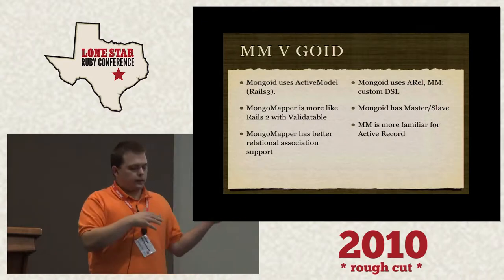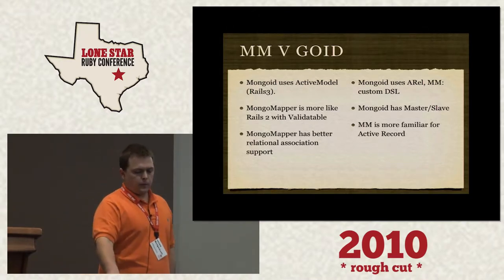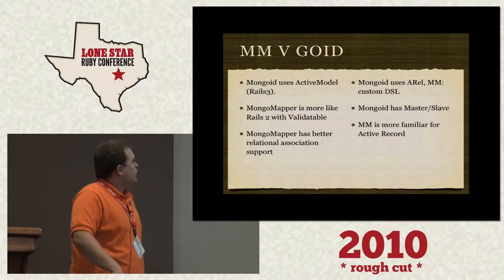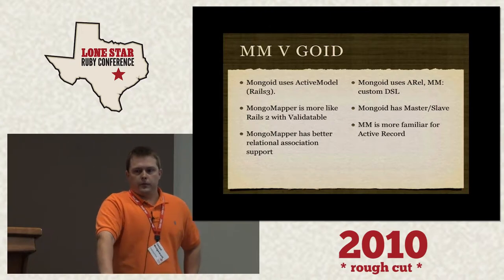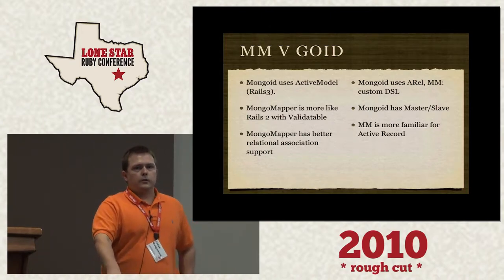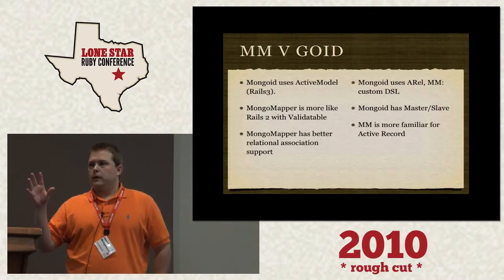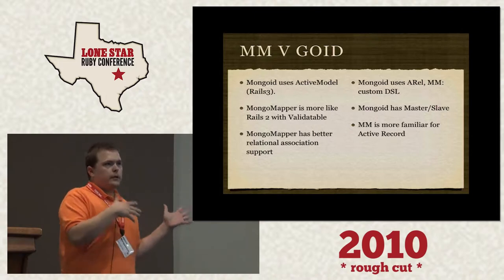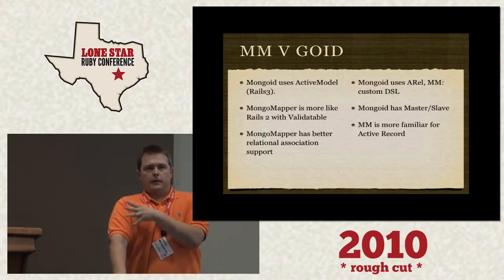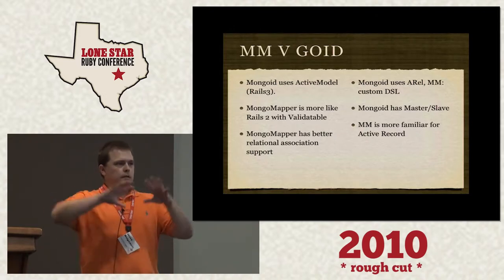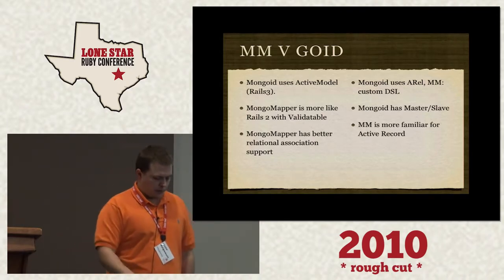On the plus side, MongoMapper has better associations — you can say school.students and just walk the tree very easily; Mongoid, you can't. Mongoid uses Arel for your queries. MongoMapper just released a domain-specific language to build all of your where clauses, which is pretty nice. MongoMapper is more familiar for ActiveRecord users — easier to drop a Rails developer into a MongoMapper project and have them be productive. Mongoid takes a bit more research, but it has declarative master-slave: you can specify whether a query should go to slave databases or must be on the master.